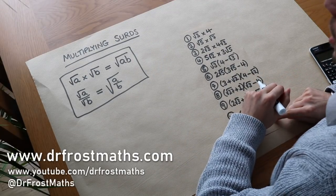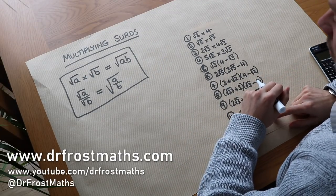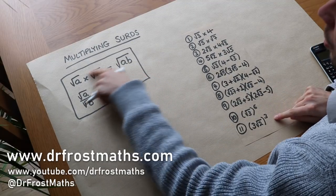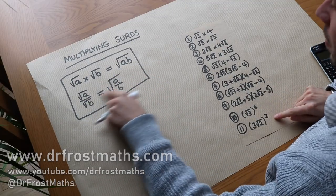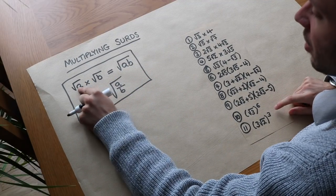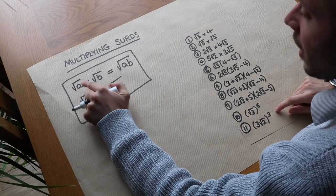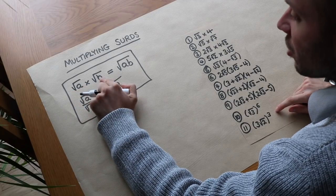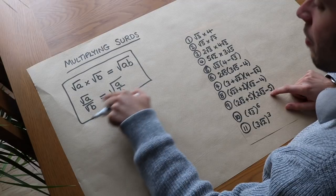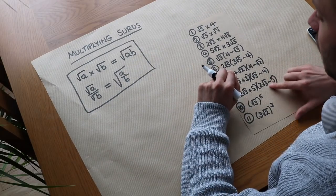Hello and welcome to this video on multiplying surds. Now we saw in previous videos these two fundamental laws of surds: if we multiply two surds together, two roots, then we can just times those two numbers together, and if we divide them then we can just divide the two numbers.